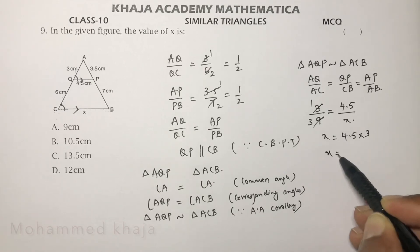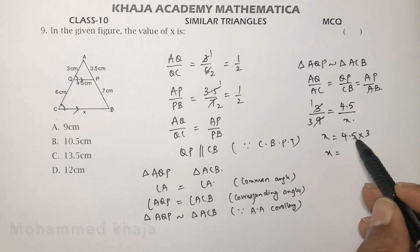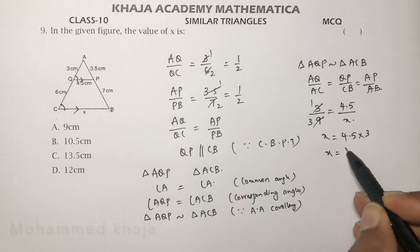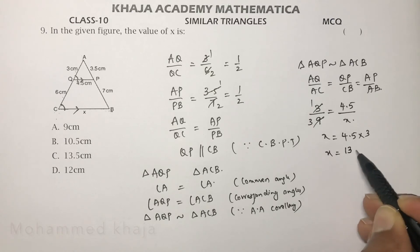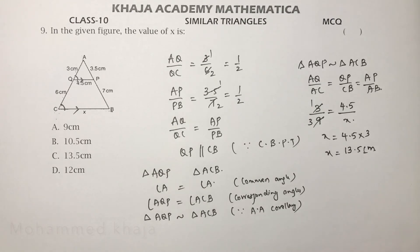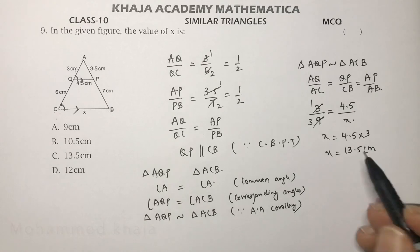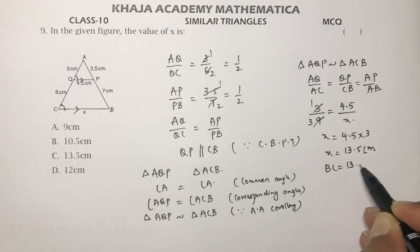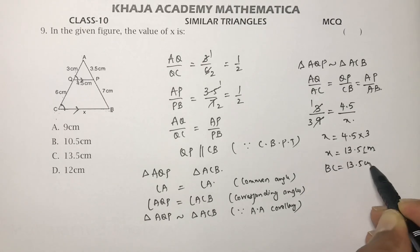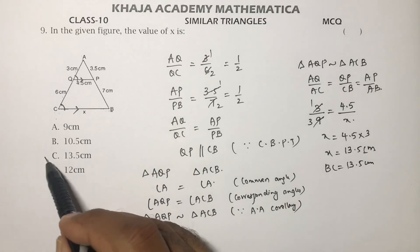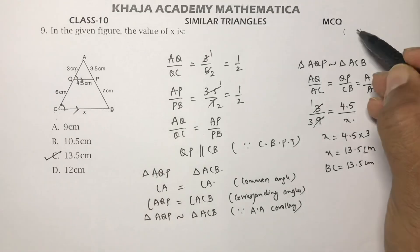Cross-multiplying: X = 4.5 × 3 = 13.5 cm. So BC = X = 13.5 centimeters, and the correct option is C.